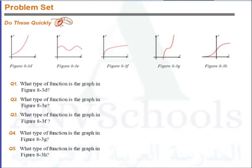For question number 1, what type of function is the graph in Figure 8-3D? Figure 8-3D is an exponential function. Why could it not be a power function? Because it doesn't touch the origin. So therefore, this question number 1 is exponential.